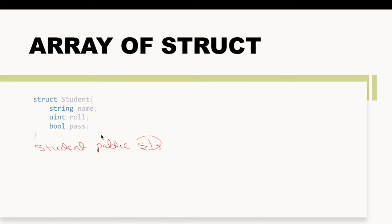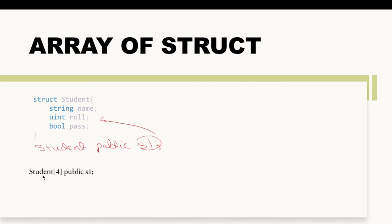The problem with this approach is that s1 can only hold the data value of a single student — we cannot store the data of multiple students. Let's say I want to store data of 100 students; s1 is not capable enough because it is a single variable pointing to one particular struct. In order to do that, we need to create an array of structs.